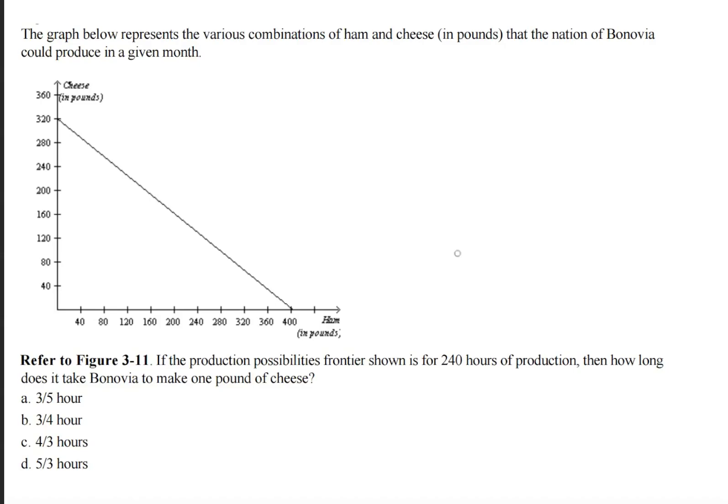The question asks, if the production possibilities frontier shown is for 240 hours of production, then how long does it take Bonovia to make one pound of cheese?